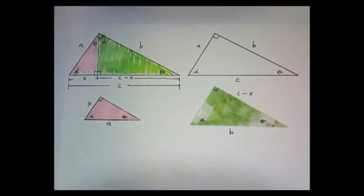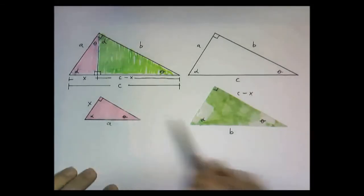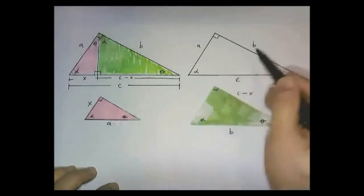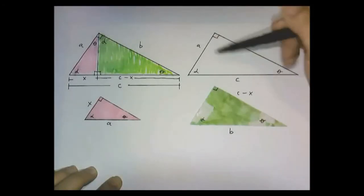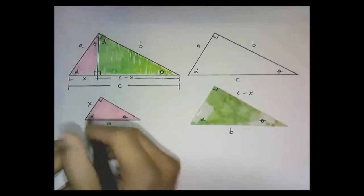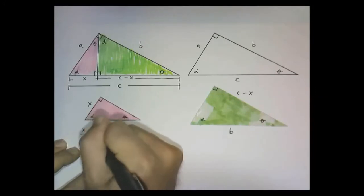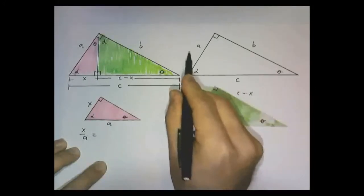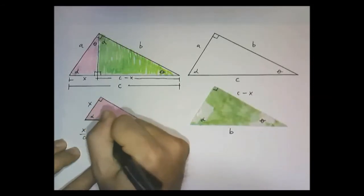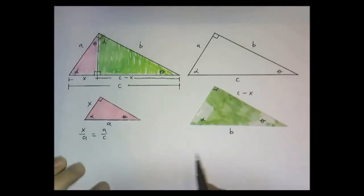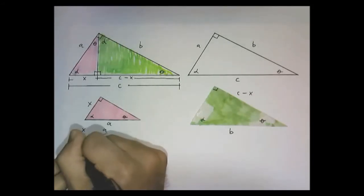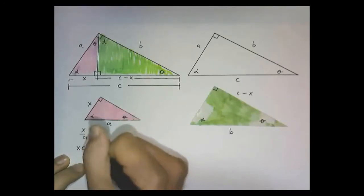These two triangles have the same shape — and they should, since they're similar triangles sharing at least two common angles. What that means is that the ratio of sides is proportional between all three of these triangles. Between these two triangles, the ratio of x to A is equal to the ratio of A to C. So: x divided by A equals A divided by C. Cross-multiplying, x times C equals A times A, or A squared.